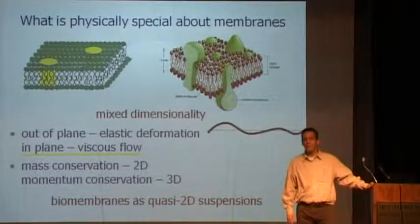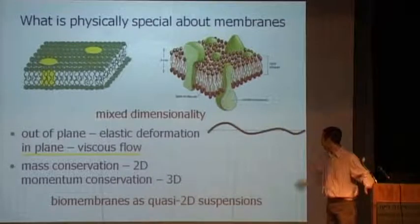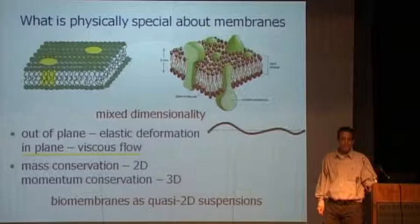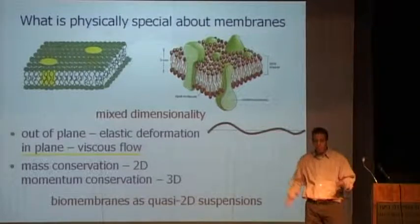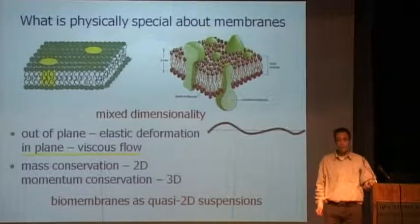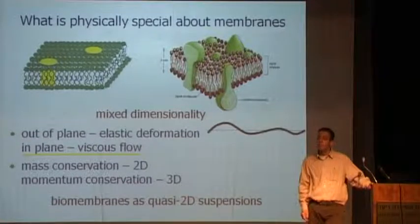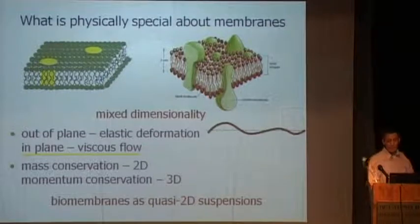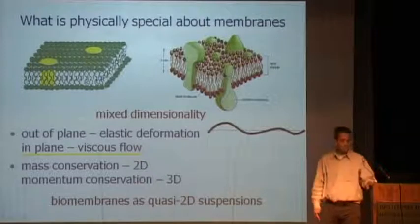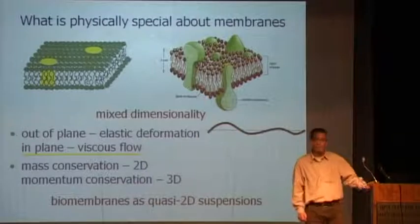From our non-biological point of view, we look at biomembranes as quasi-two-dimensional suspensions. Why two-dimensional? Because it's a sheet. Why quasi-two-dimensional? Because they do collide with water molecules, so you have to worry about the 3D solution in which this structure is embedded. Why suspension? Because it's not homogeneous — it has embedded proteins which are much bigger than the lipids and therefore can be looked upon as an analogy of colloids in a suspension.